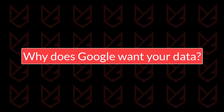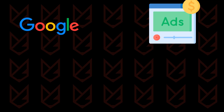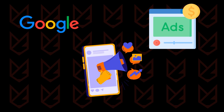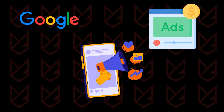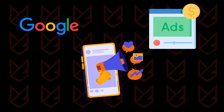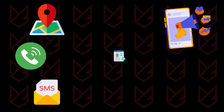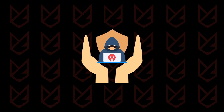Why does Google want your data? Google is an advertising company. It earns money by showing advertisements to its huge number of users. To serve better and targeted advertisements, it collects information about its users. The information is used to determine what kinds of ads are suitable for you. This information might include the kind of places you visit, types of calls you get, and the kind of SMS you receive. All this information is used to create your profile, and then they use it to serve you targeted and personalized ads. Google Play Protect does this all without any interruption in the name of protecting your devices.